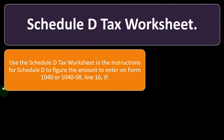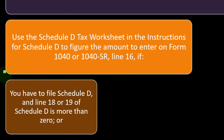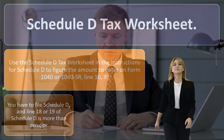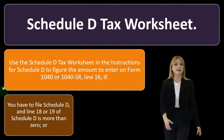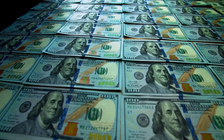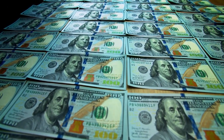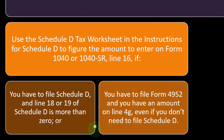Schedule D Tax Worksheet: use the Schedule D tax worksheet in the instructions for Schedule D to figure the amount to enter on Form 1040 or 1040-SR, Line 16, if you did file a Schedule D and Line 18 or 19 of the schedule is more than zero. This is because Schedule D relates to capital gains and losses — usually from the sale of stocks — and you might have long-term capital gains that could have more favorable tax rates than ordinary income rates. The income from Schedule D still flows into taxable income, but it can't be taxed at the same progressive rates since it's not ordinary income; it must be broken out and taxed at the capital gain rates.